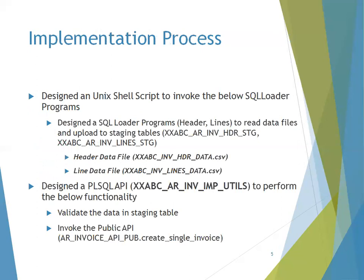The implementation process I'm following for AR invoices involves multi-level data — header, line, and distribution — but this example covers only two levels: header and lines. I designed a separate control file for loading header data into a staging table, another control file for line data into a line staging table, and a unique shell script to invoke both control programs, registered as the first concurrent program. The second concurrent program validates data in the staging table and then calls the public API.